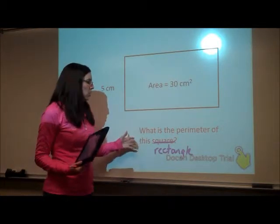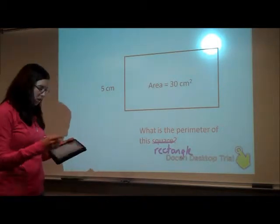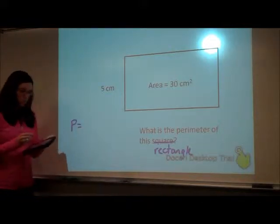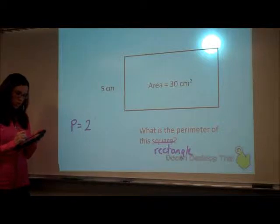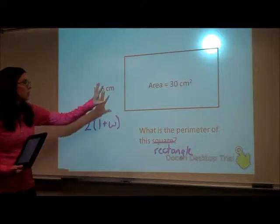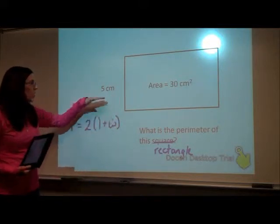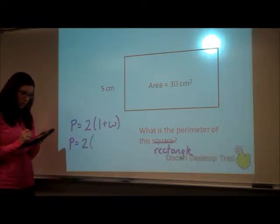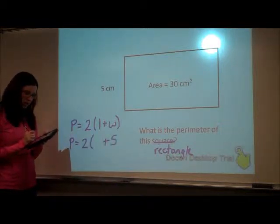So first of all, let's go with what I'm trying to find. I'm trying to find the perimeter. So writing down the perimeter formula, it's 2 times the sum of my length and my width. Okay, so of this rectangle, I know that the width is 5. So I'm going to rewrite this. The width is 5.